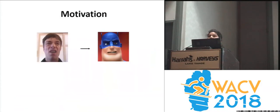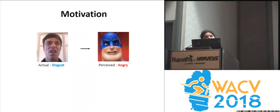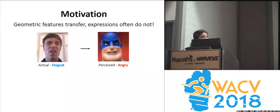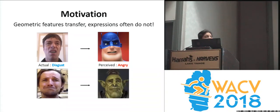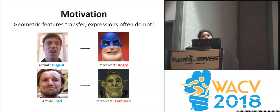Current expression transfer systems are based on transferring geometric features from humans to characters. As you can see, the problem with this system is most of the geometric points get transferred, but the perception of the expression doesn't. Here is another example where the human looks sad, but the perceived expression transferred on the character looks more like confused.